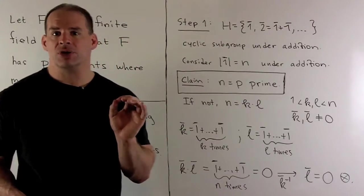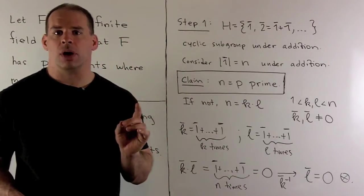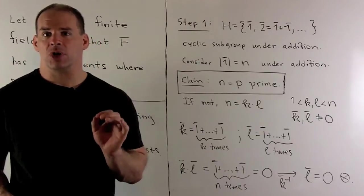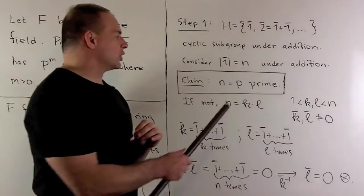So, k bar times l bar is going to give me zero. If I apply k bar inverse to both sides, I get l bar equals zero, and that gives me a contradiction. So, that means we couldn't factor n in the first place, which means it's going to be a prime number.